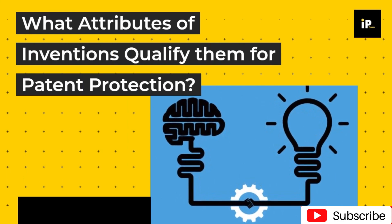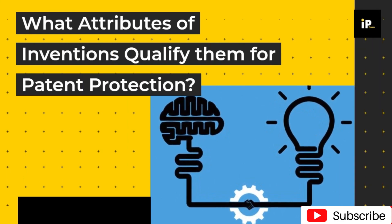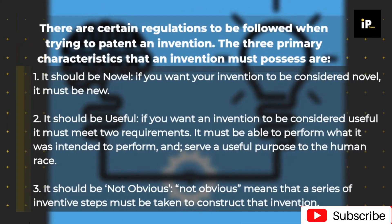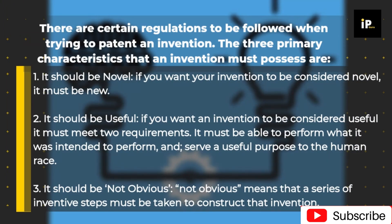What attributes of inventions qualify them for patent protection? There are certain regulations to be followed when trying to patent an invention. The three primary characteristics that an invention must possess are: one, it should be novel — if you want your invention to be considered novel, it must be new.